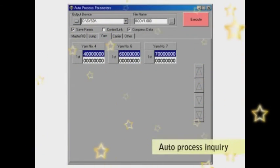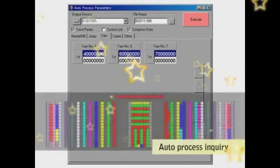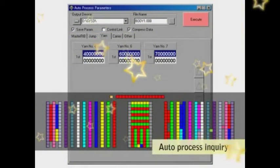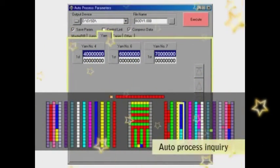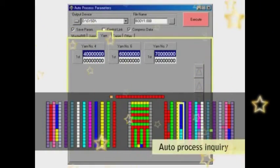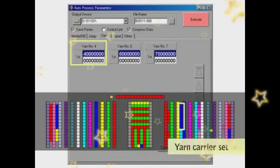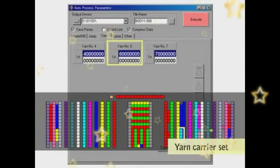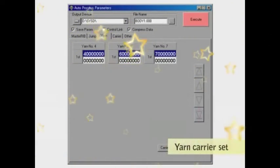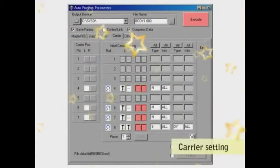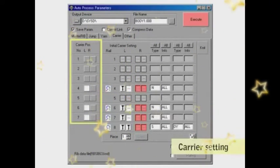Next, enter the Auto Process Inquiry. In Auto Process Inquiry, enter the detailed information according to the original drawing information specified with option line. For example, in the setting screen for yarn carrier, enter the carrier number to be used for each color specified with option line R3. Enter the start position and type of the carrier to be used.